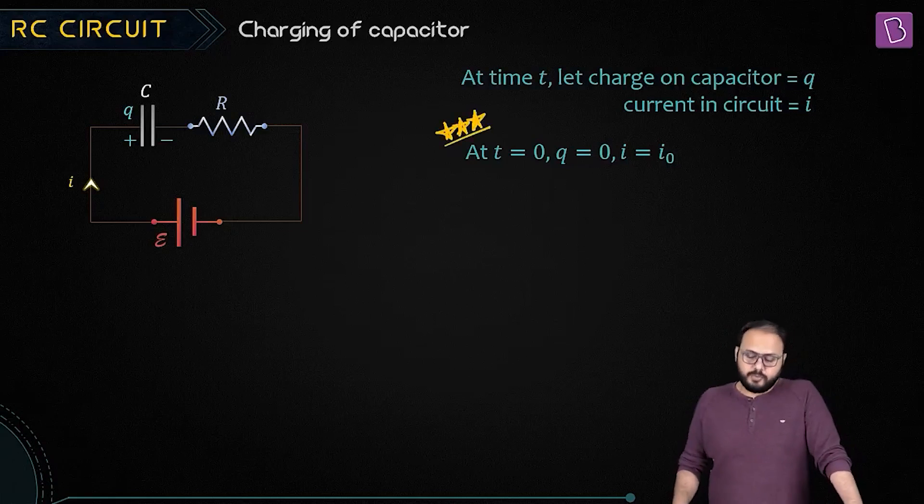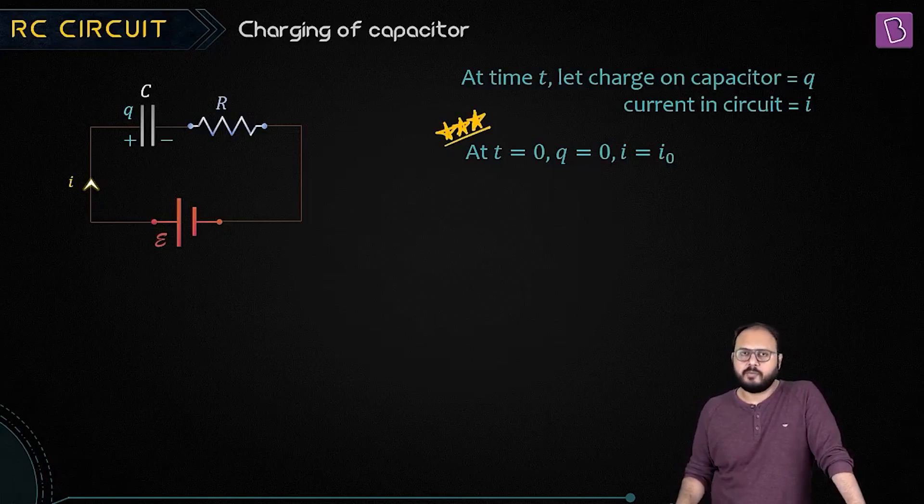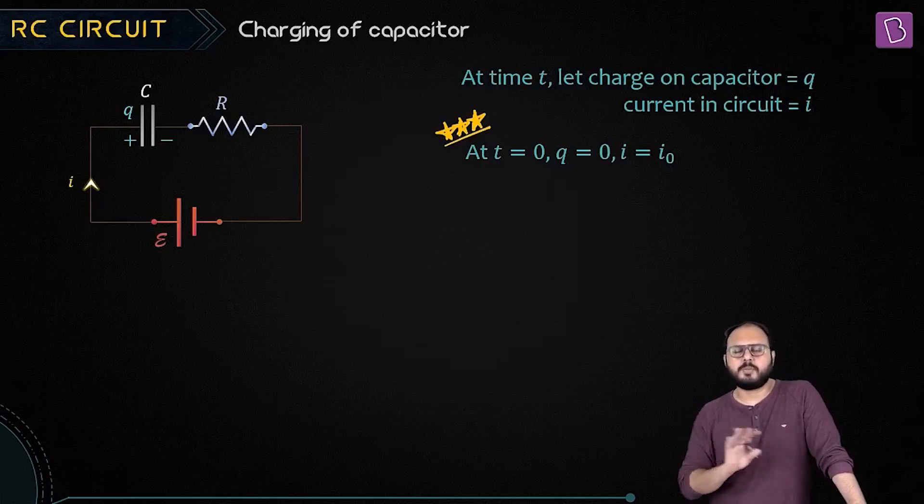At t equal to zero, q equal to zero and i equal to i_naught. I didn't get that.